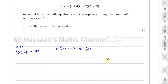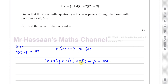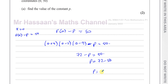So we can basically substitute 0 into this function. We have (0+4)=4, and (0-2)=-2, and 2(0)-9=-9, minus p equals 50. So that's 4 times -2 times -9: negative 8 times negative 9 is positive 72. So 72 minus p equals 50, therefore p equals 72 minus 50, which gives p equals 22. That's the answer to part A.